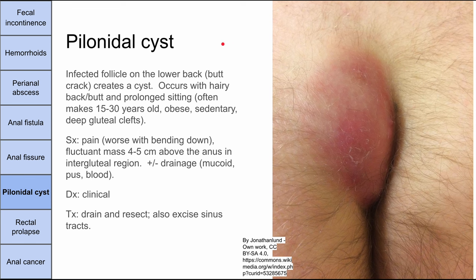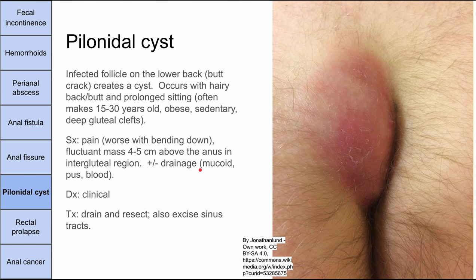Next is the pilonidal cyst, also called pilonidal disease. This is caused by an infected hair follicle on the lower back — essentially the top of the butt crack — that creates a cyst. It usually occurs in males aged 15 to 30 with a hairy back and buttocks who sit for long periods, sometimes obese, with deep gluteal clefts. Sitting compresses hair follicles, they become occluded, and a pilonidal cyst forms. Symptoms are pain, usually worse when bending, and you'll see a fluctuant mass four to five centimeters above the anus in the intergluteal region, with possible drainage that can be mucoid, pus, or blood. Diagnosis is clinical. Treatment is drainage and resection, including excision of any sinus tracts.